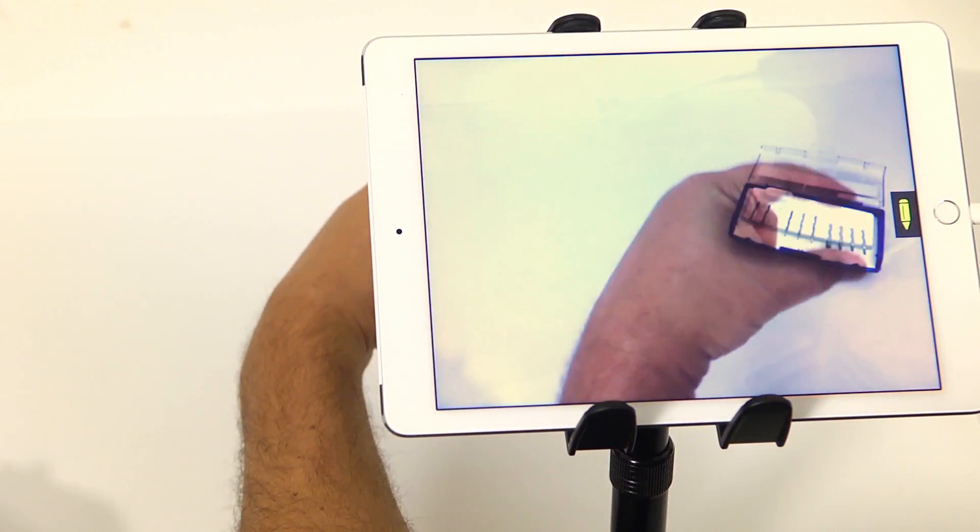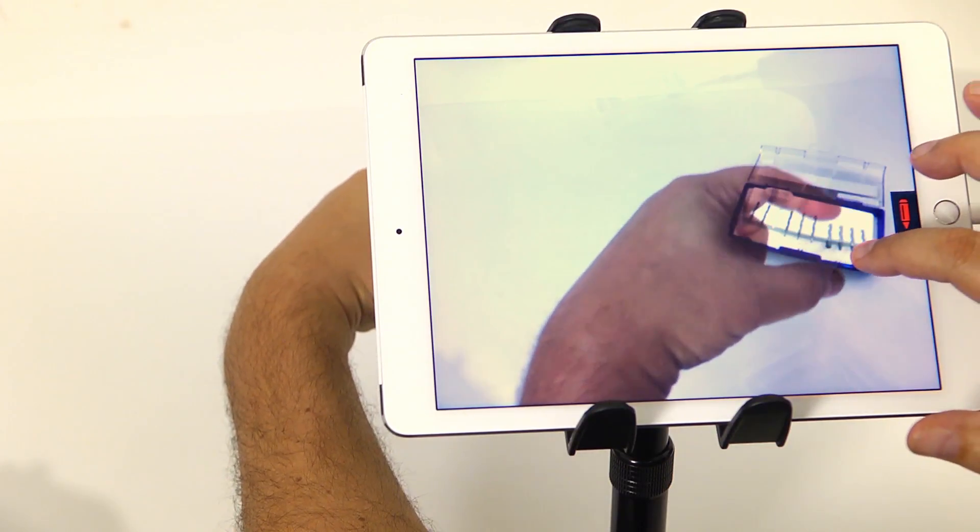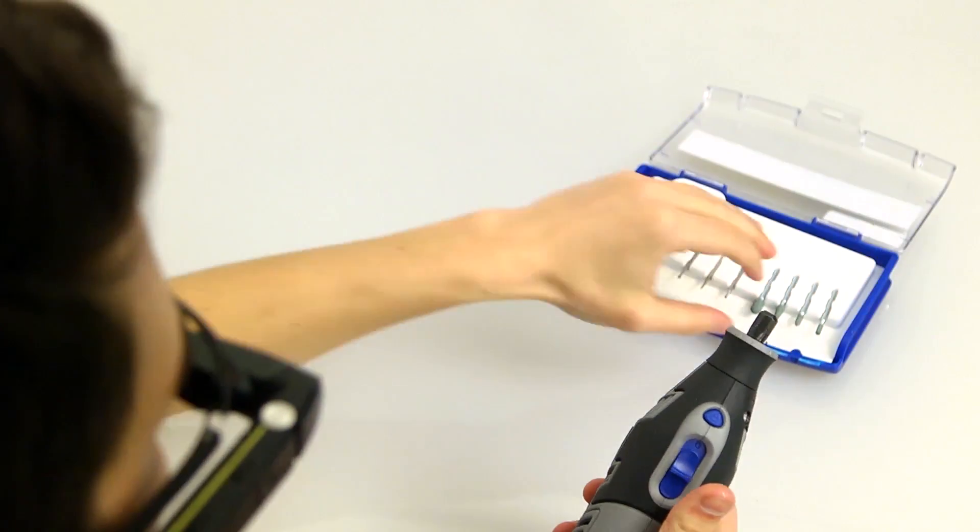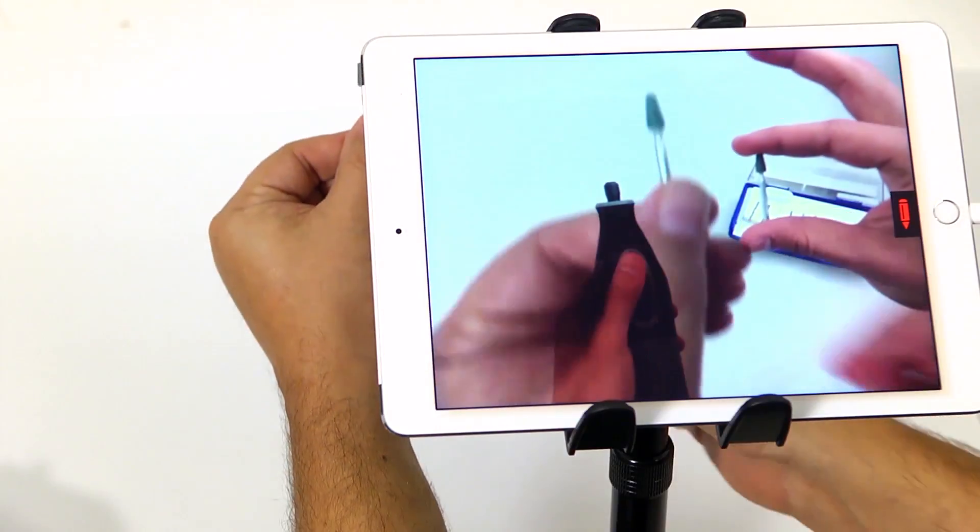We're going to select the correct engraver. It's this one right here. Let me show you very precisely which one it is. It's this one right there. Take that one out of the box and compare it to this one.